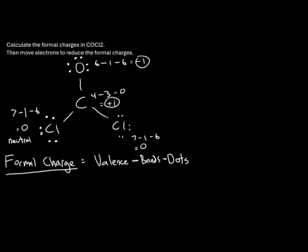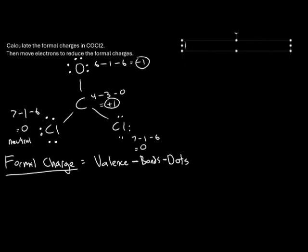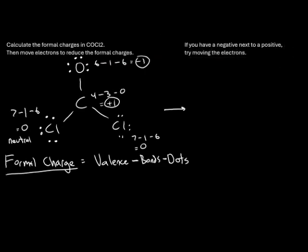Our structure as drawn has a negative charge next to a positive charge. When you have a negative charge next to a positive charge, you can move some electrons to reduce the formal charges. We take two of the dots off of oxygen and move them between carbon and oxygen to make a new double bond. Now we have C double bonded to O; oxygen has four dots instead of six, while the chlorines remain unchanged with six dots each.